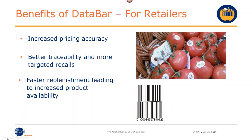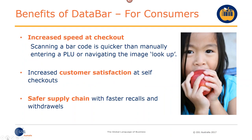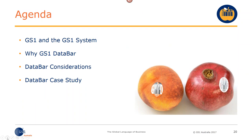Benefits include better traceability, targeted recalls, faster replenishment, ensuring your product is on the shelf at all times, and having the right products at the right time in the right place. For consumers, there's increased speed at checkout, better customer satisfaction, and a safer supply chain. With other data bar implementations yet to come, there'll be even more benefits — for example, linking scan data to loyalty programs such as Flybuys or Woolworths Rewards cards, so that if there's an affected batch of a product, the consumer could be contacted directly about a recall or withdrawal.